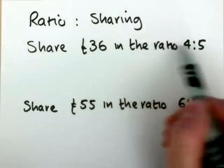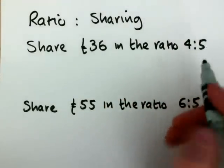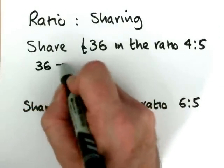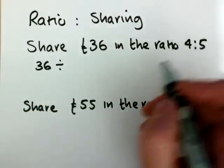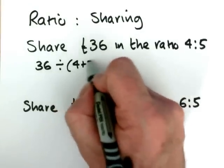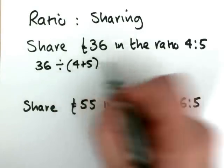We'll have to share £36 in the ratio 4 to 5. First of all, we need to find out what one share is worth. All together, we've got 9 shares. That comes from 4 plus 5.